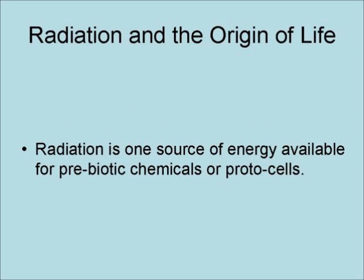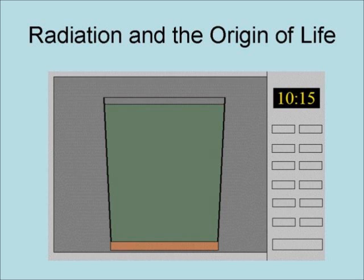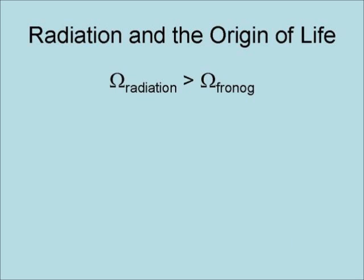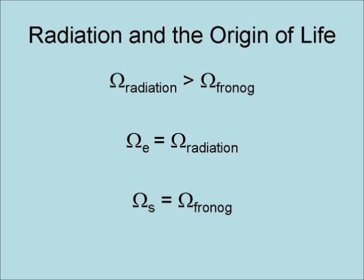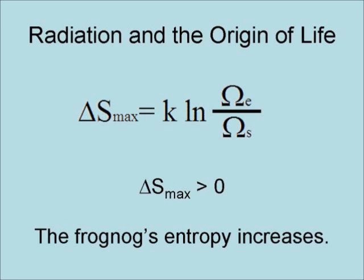Radiation is one source of energy available to prebiotic chemicals or protocells. Taking a microwave oven and putting frog nog in it, radiation applies energy to a system in a random manner — in fact, it is more random than the frog nog or any other prebiotic soup. The actual result is that you cook the frog nog because most of the radiation is converted into heat. The result is omega radiation is greater than omega frog nog, so delta S max is greater than zero and the frog nog's entropy increases.